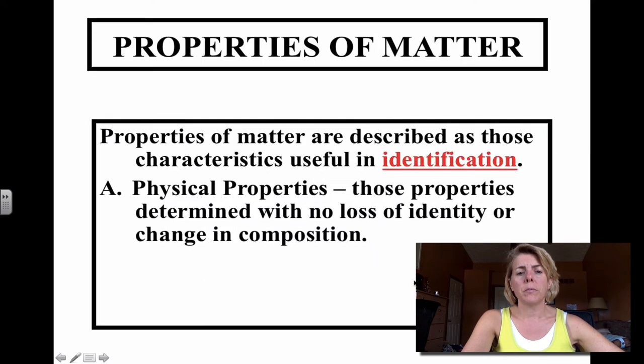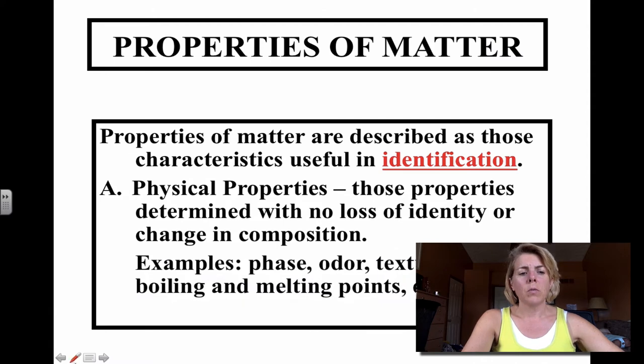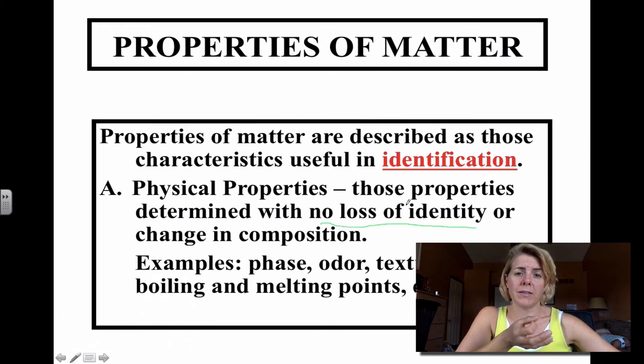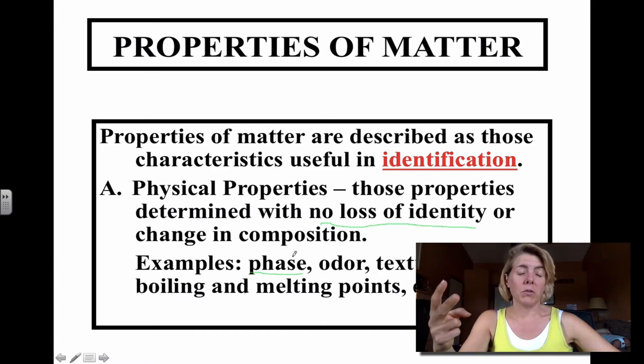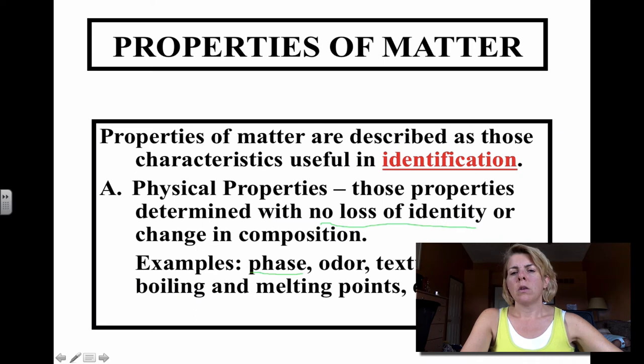Properties of matter. We're looking at physical characteristics. Notice that there's no loss of identity, and it is a unique property to that substance. We're typically looking at phase. A lot of the elements located in the periodic table tend to be solids. There's only two that are actually liquid, and those two are mercury and bromine. Another physical property would be color that is unique to that substance. When we're looking at boiling point or melting point, those are specific to that type of substance.